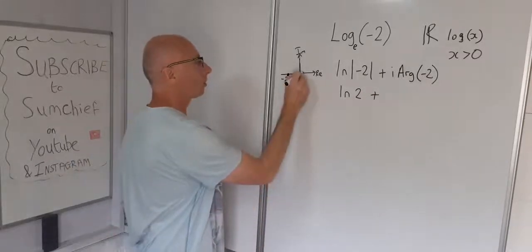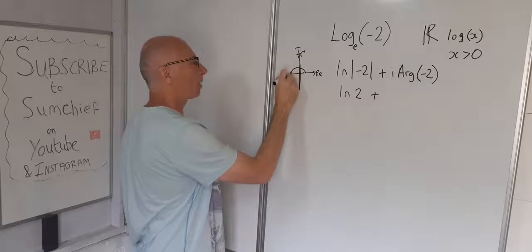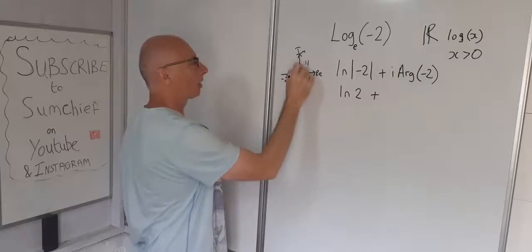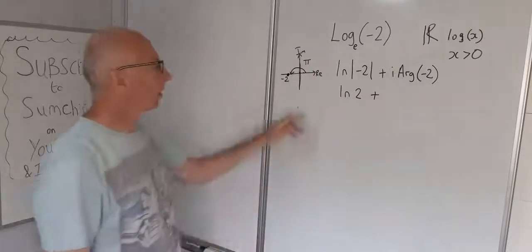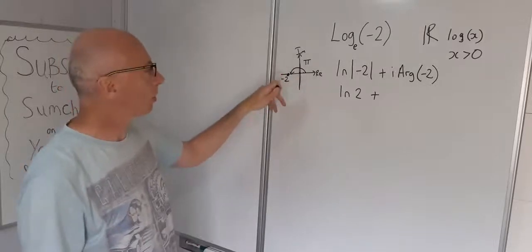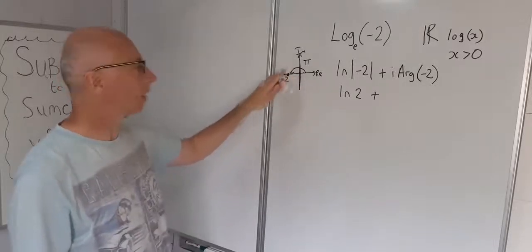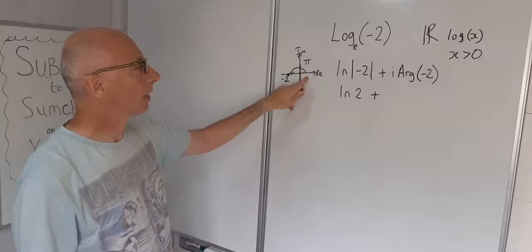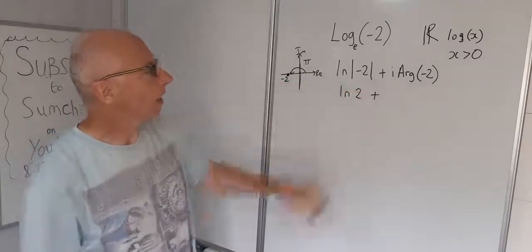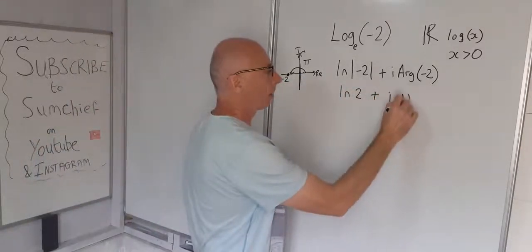So the argument is from the real axis positive side to where the point finishes. Obviously this angle here is pi, going in an anticlockwise direction, always with complex numbers unless stated otherwise. So that's pi. So this answer here is i pi.